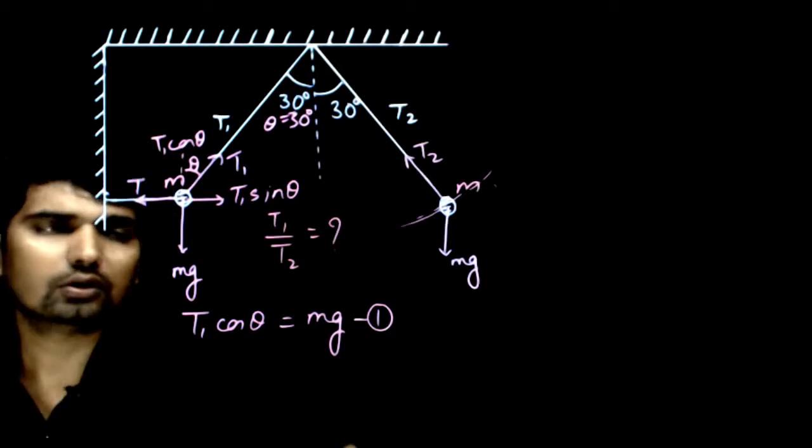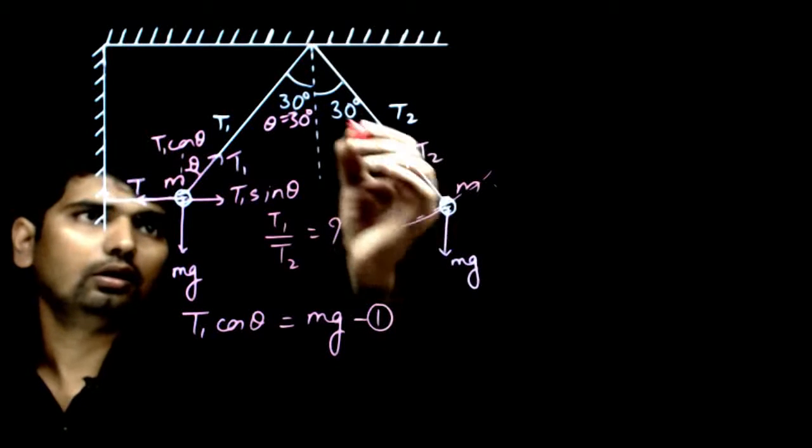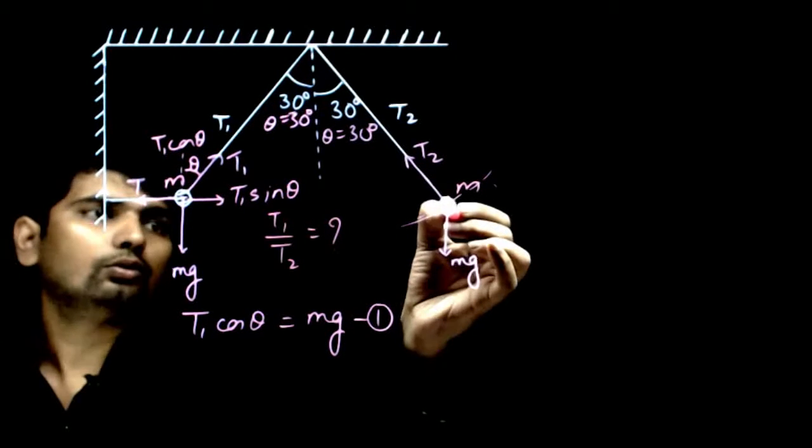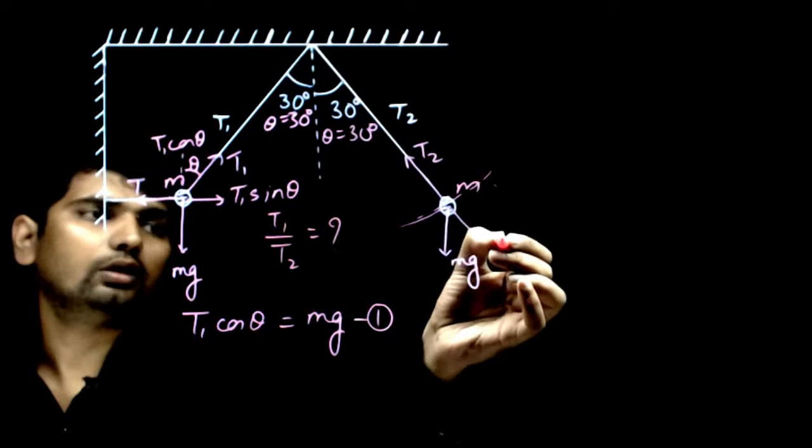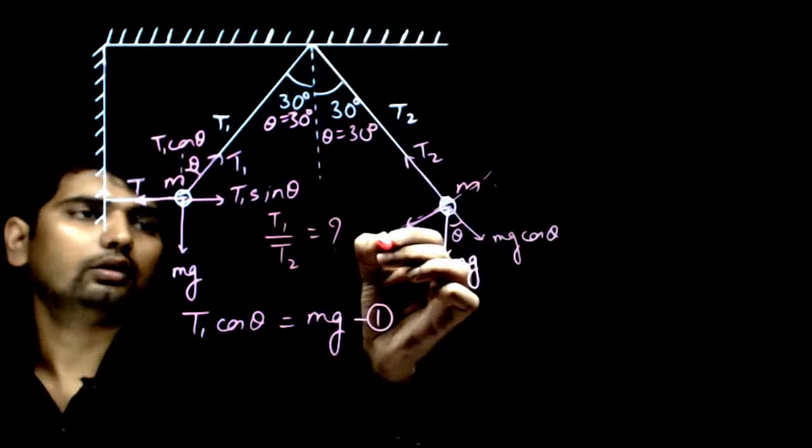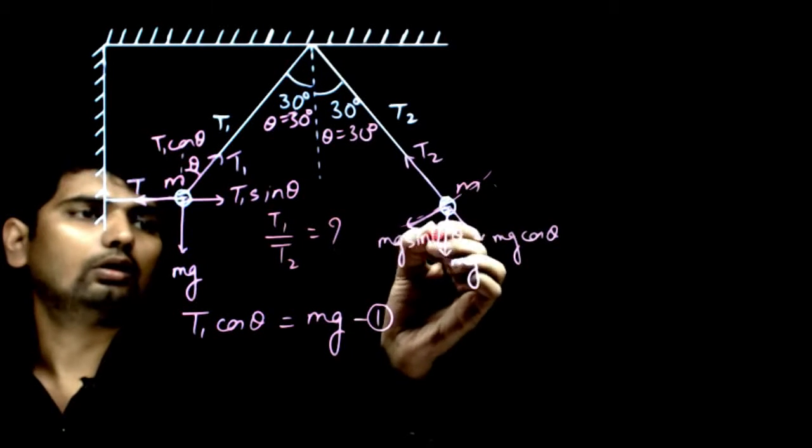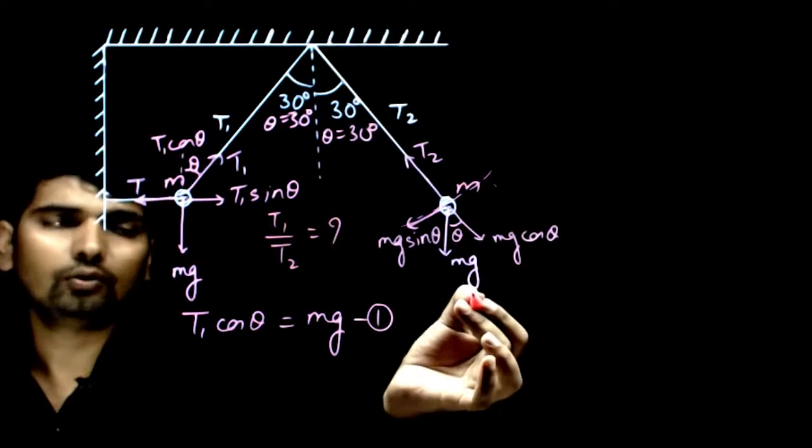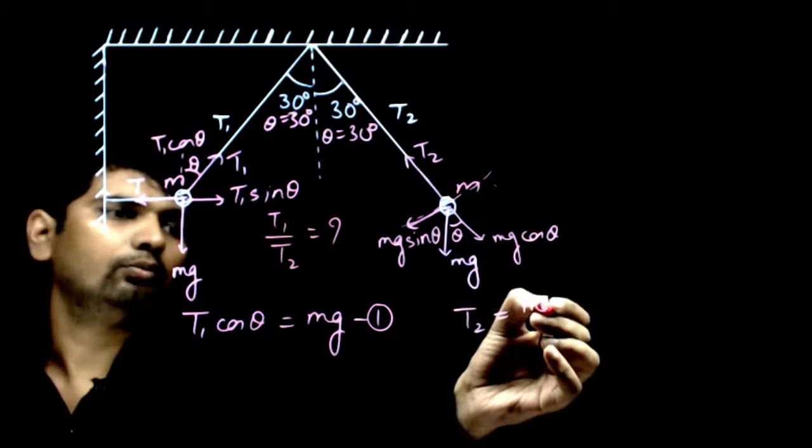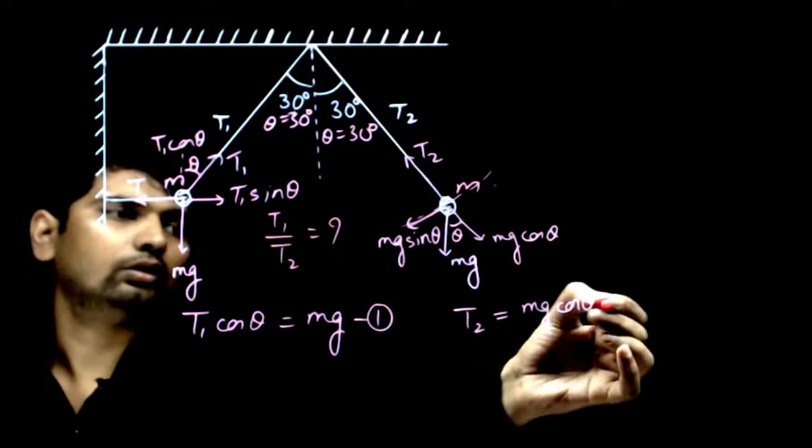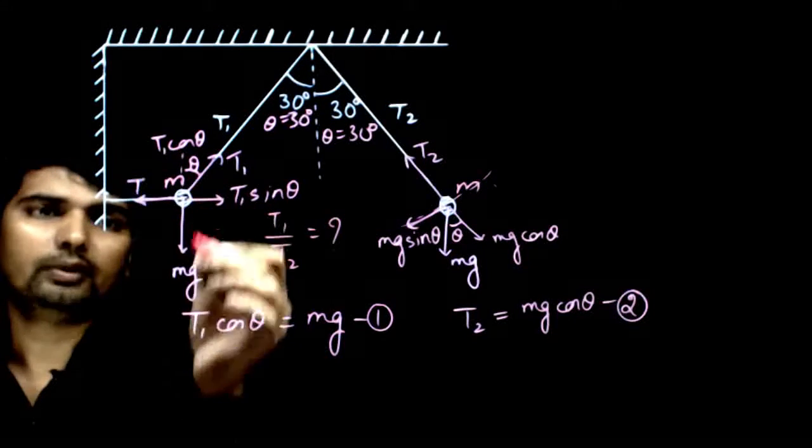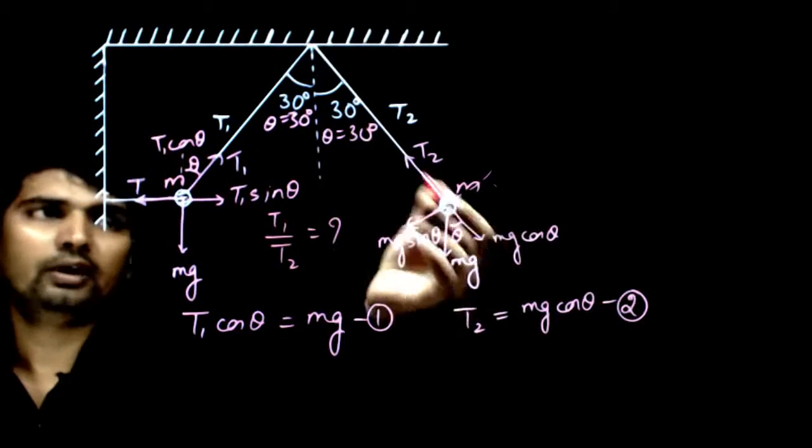Again, now this angle is theta, again theta is equal to 30 degrees, so the component of this Mg is Mg cos theta in this direction and Mg sin theta in this direction. So from here we can write the equation that T2 is balanced by Mg cos theta, this is equation 2. We can write the difference between T1 cos theta is balancing Mg and Mg cos theta is balancing T2.